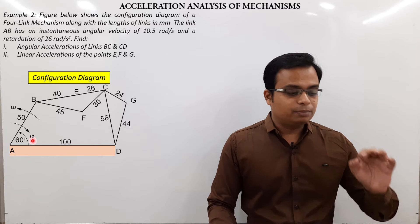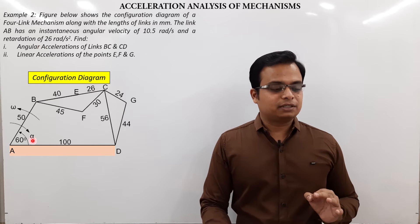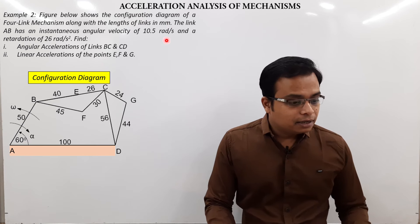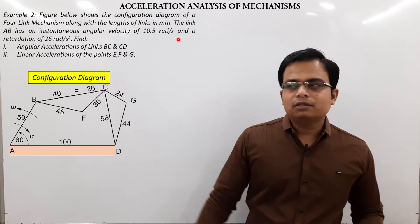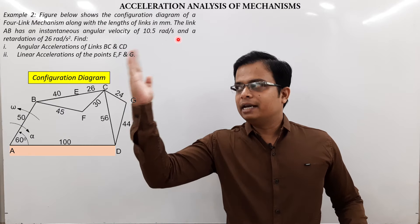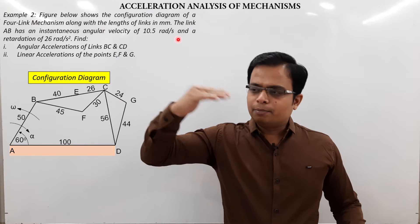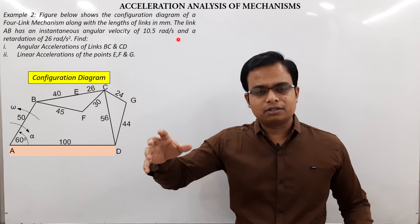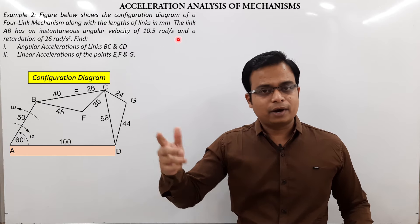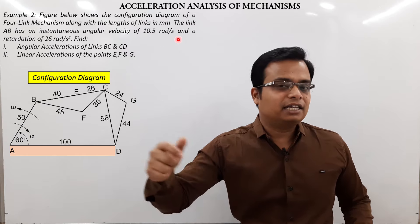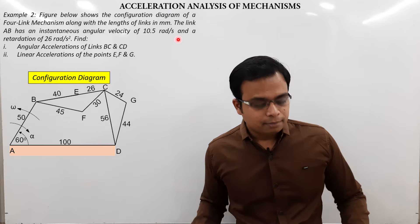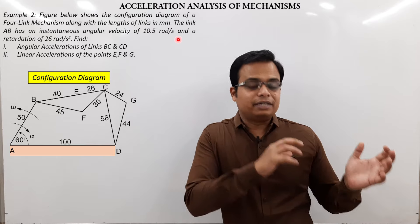The angular velocity at this instant is 10.5 radians per second. Obviously, if there is angular acceleration, the angular velocity will keep changing — it's not constant. Because of the retardation, it is going to decrease.